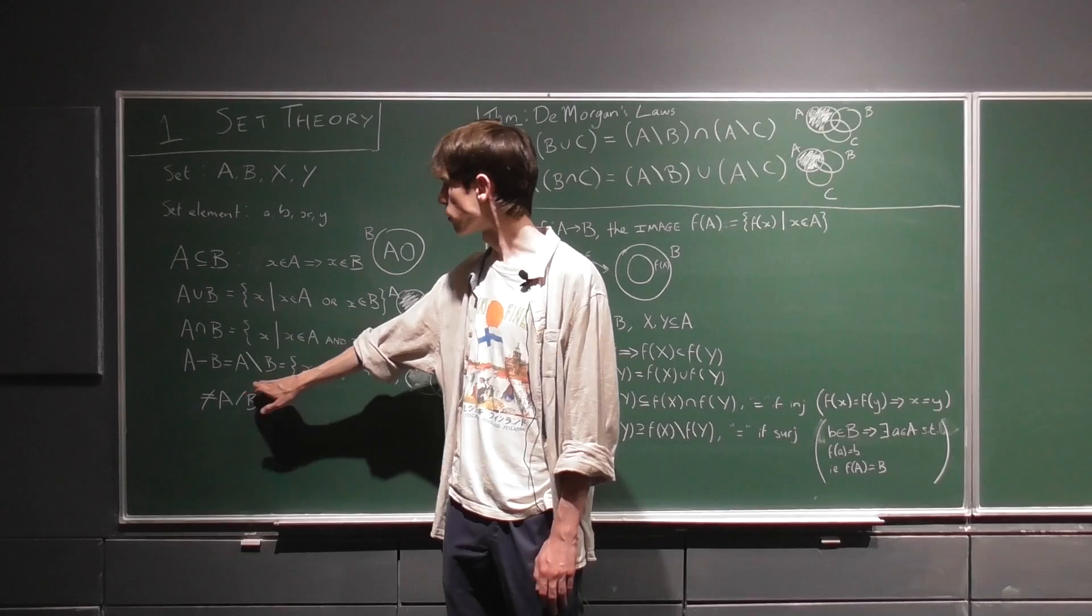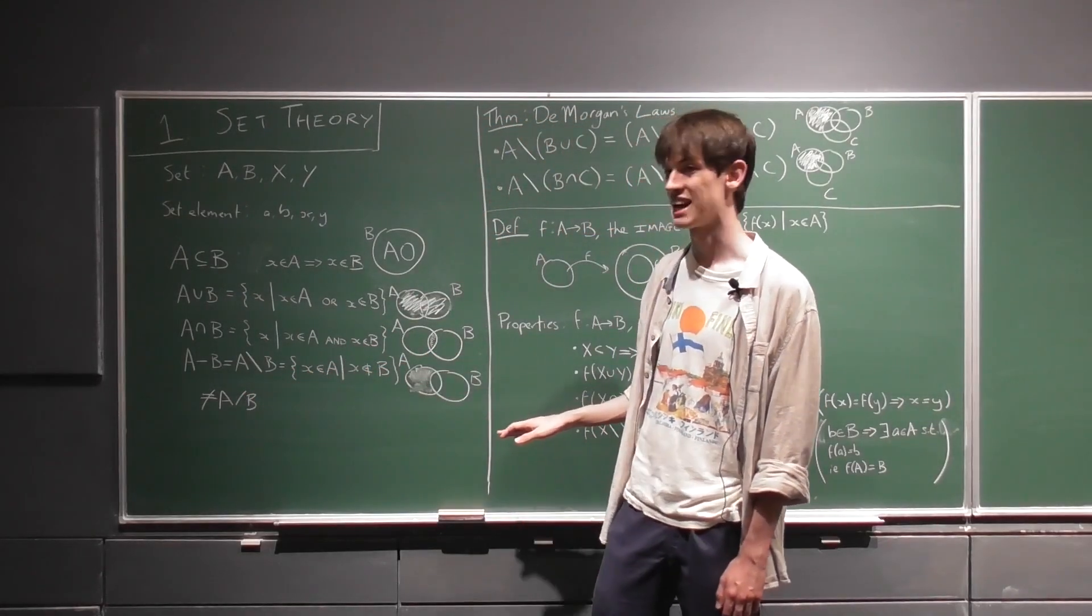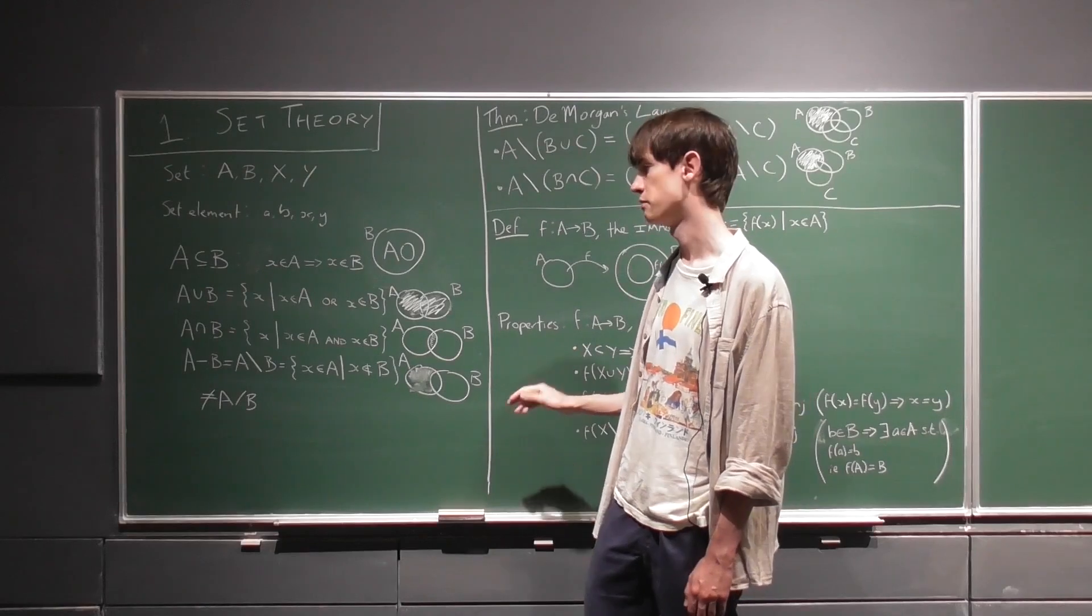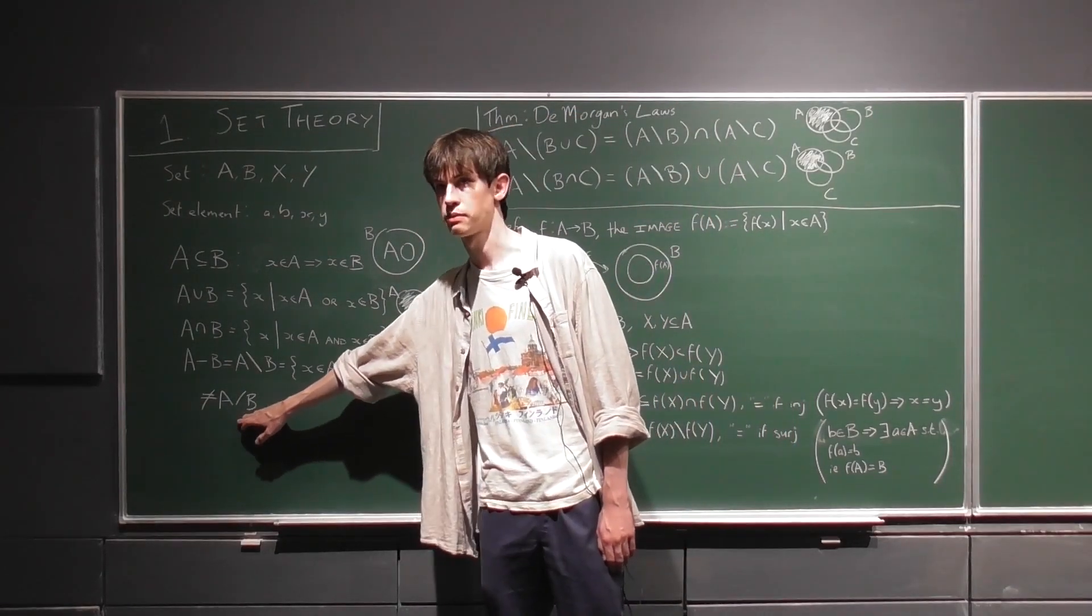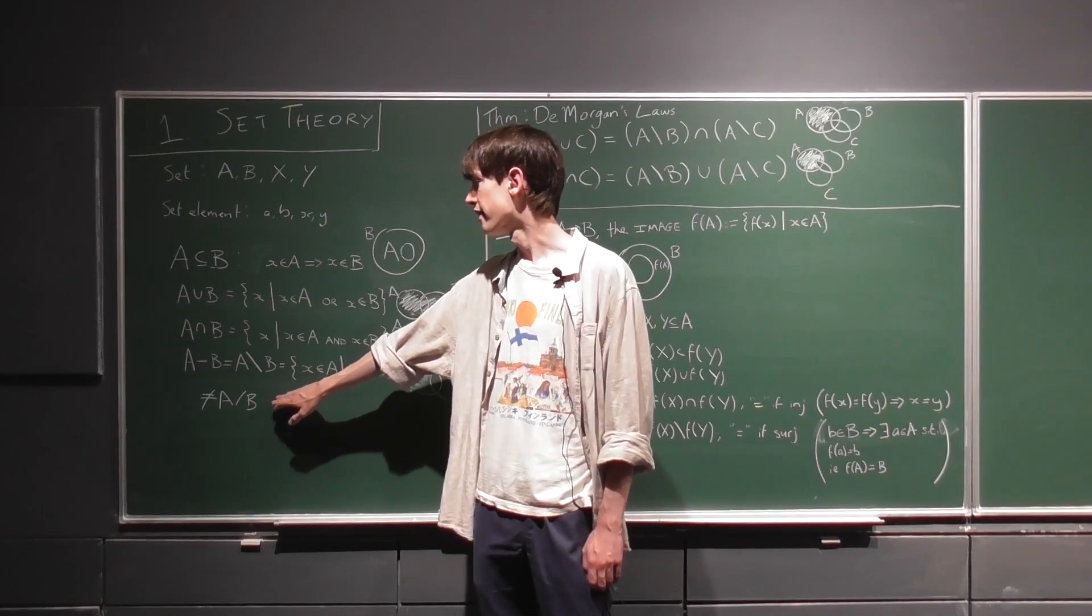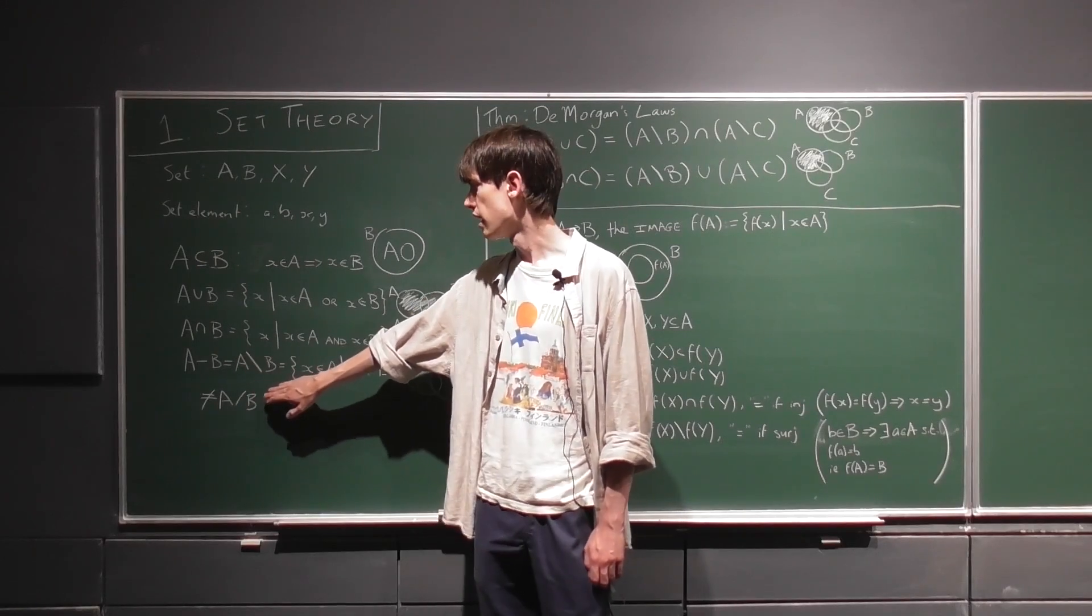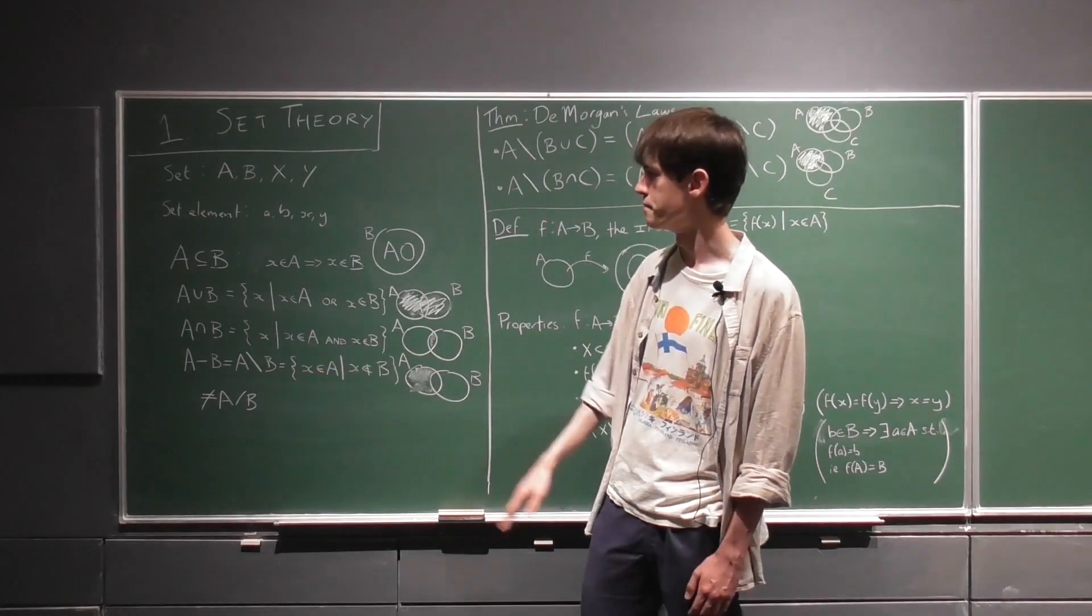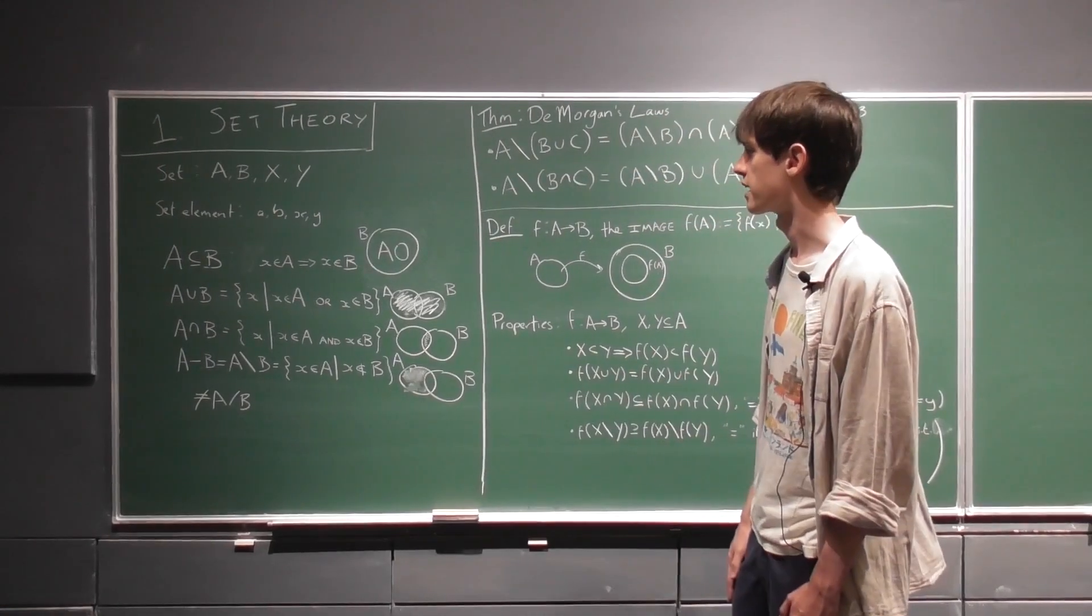This minus sign here, or this backslash, is used for a set difference, so it's the elements that are in A that are not in B. Now you can't use the forward slash because in group theory that means the quotient group, and both of these annotations are kind of kept to their separate domains. Some professors won't mind, but in general it's just good to keep them distinct.